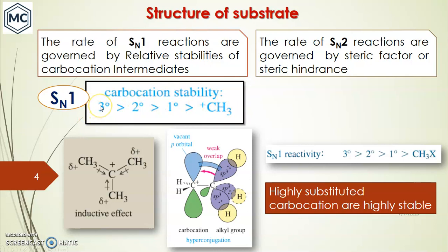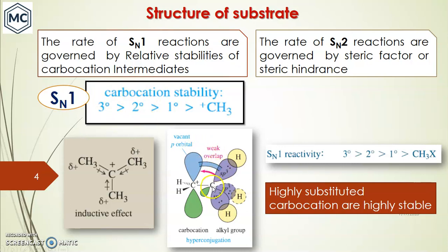This is the stability order of carbocations: tertiary is most stable and methyl carbocation is least stable. This stability order can be explained based on two electronic effects: one is the inductive effect and the second is the hyperconjugative effect. The positive charge on the carbocation can be stabilized by a +I group (electron-donating group) like an alkyl group. Three alkyl groups donate electron density to this carbon, stabilizing it compared to secondary.